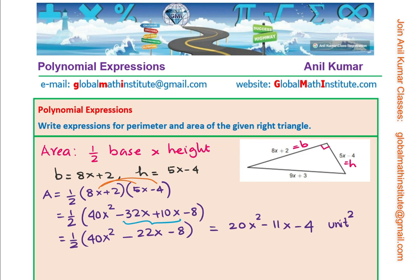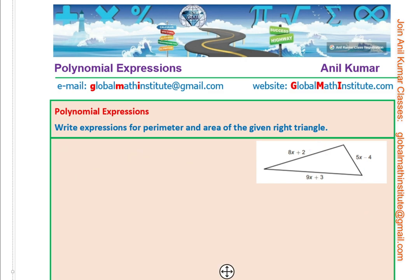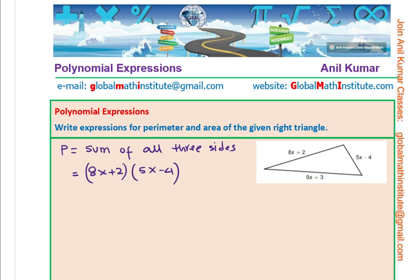Now, for the same triangle, let's find the perimeter. So, once again, perimeter of a triangle is what? Well, perimeter is sum of sides. So, we are going to add them all.